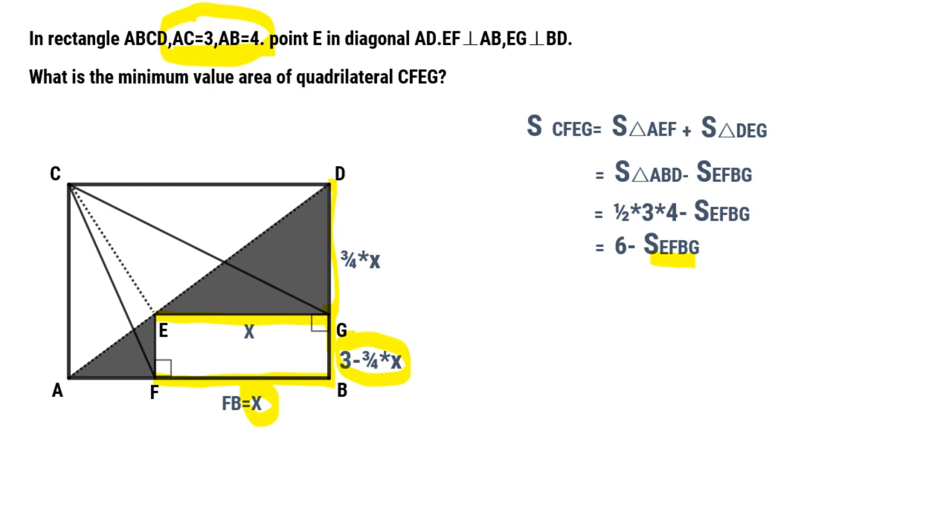So we get the equation for area of CFEG in terms of X. After simplifying and converting: 3/4 times (X minus 2) squared plus 3.